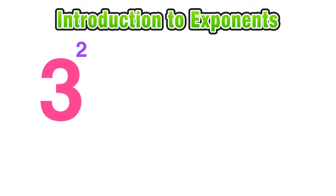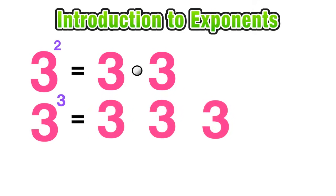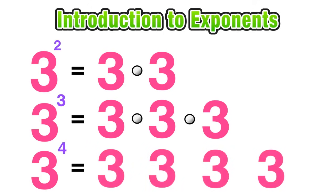And now we can extend this thinking. We know that 3 to the 2nd power equals 3 times 3 for multiplying 3 twice. 3 to the 3rd power equals 3 times 3 times 3 for multiplying 3 3 times. And of course, 3 to the 4th power is going to equal 3 times 3 times 3 times 3, or 3 multiplied 4 times.